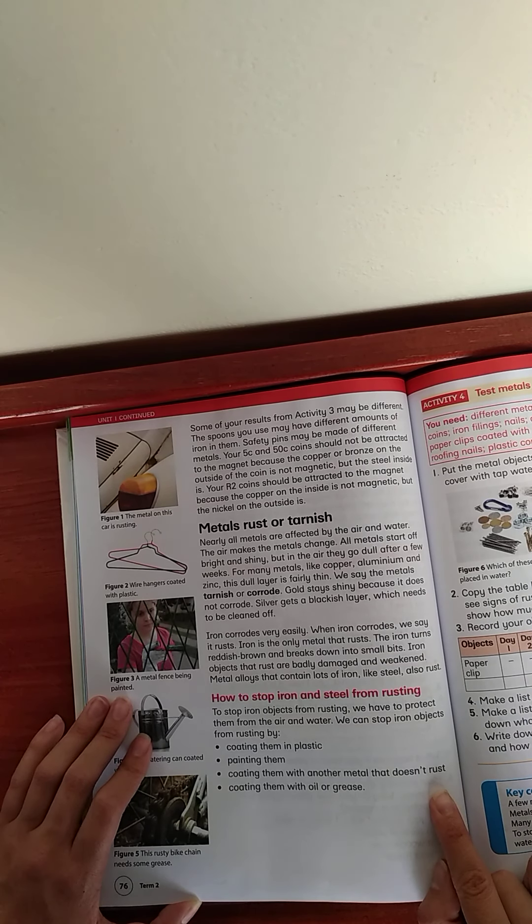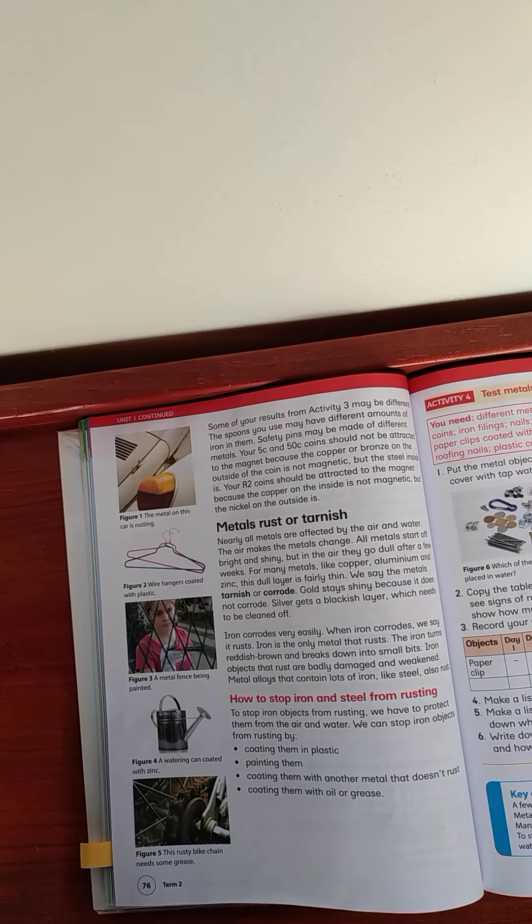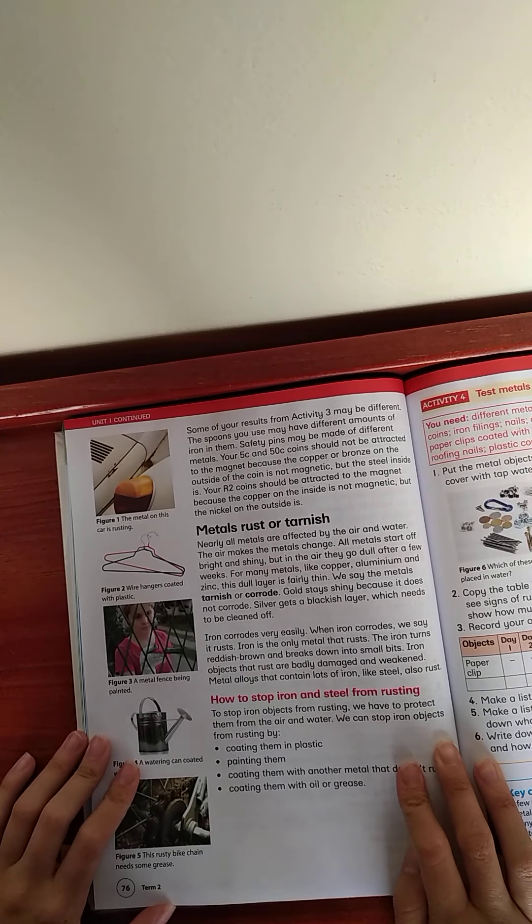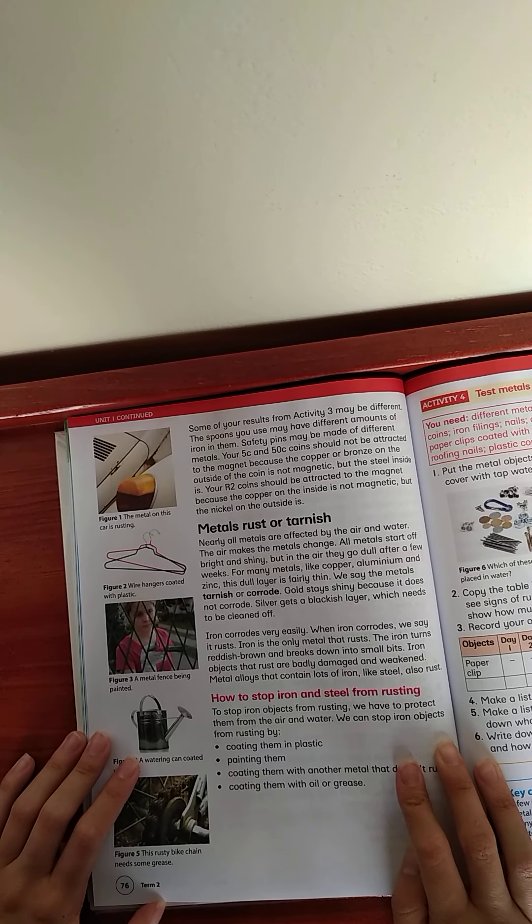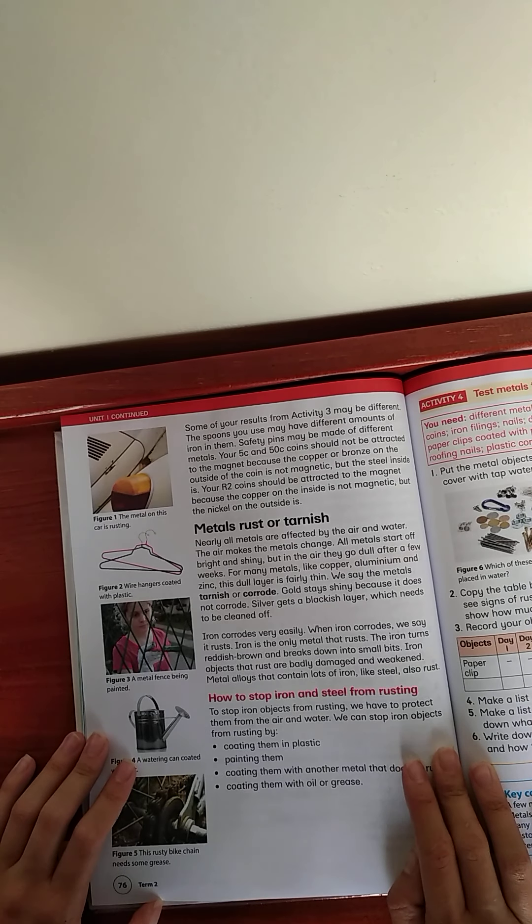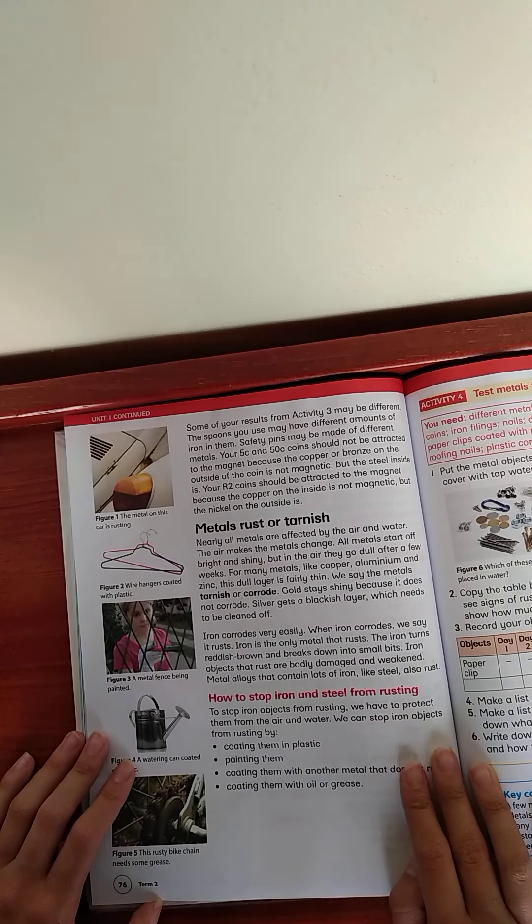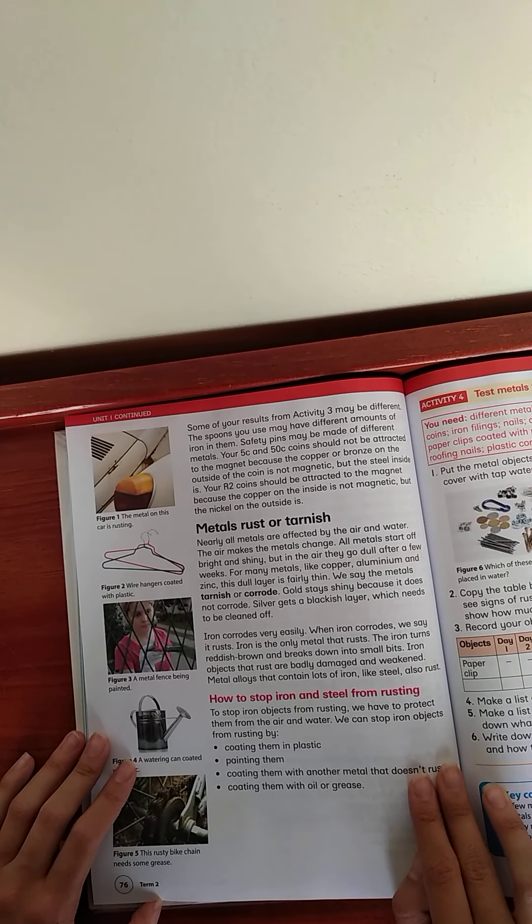Metal rust or tarnish. Nearly all metals are affected by the air and water. Air makes the metal change. All metals start off bright and shiny, but in the air they go dull after a few weeks. For many metals like copper, aluminum, and zinc, this dull layer is fairly thin. We say the metals tarnish or corrode. Gold stays shiny because it does not corrode. Silver gets a blackish layer which needs to be cleaned off. You usually get jewelry cleaner for that because jewelry is usually made from silver.